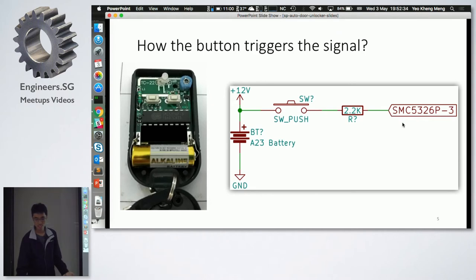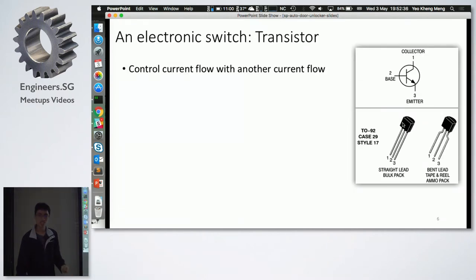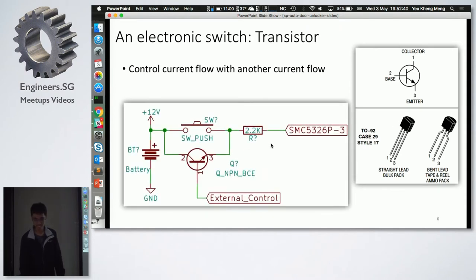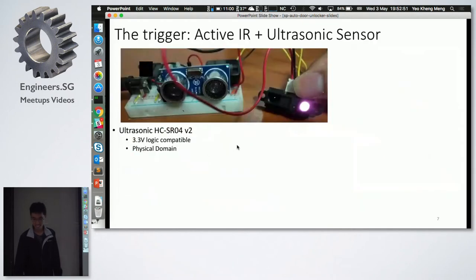So I found out that by pressing the button, you're just conducting the 12 volt battery power from the battery over to the chip, from here to here. So maybe I can trigger it through a transistor. The transistor is like an electronic switch. So I have something here that will trigger the transistor and the transistor will just bypass the switch.